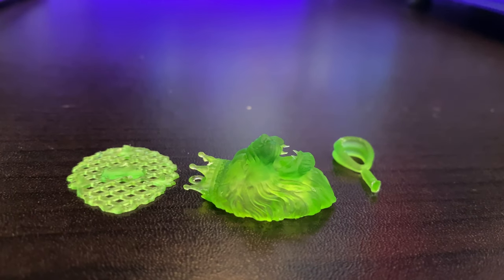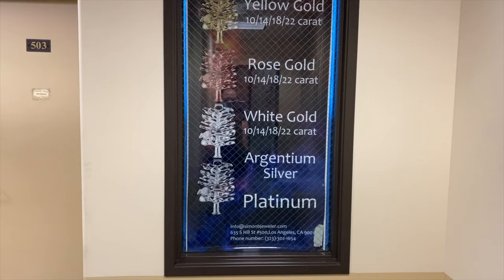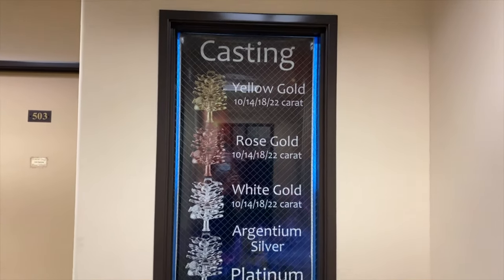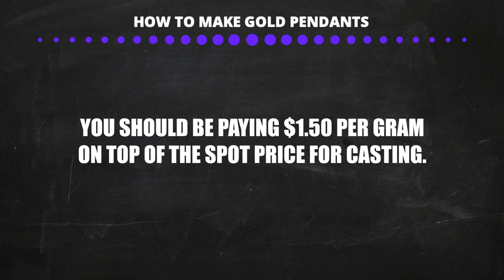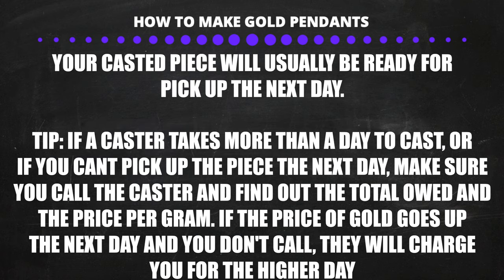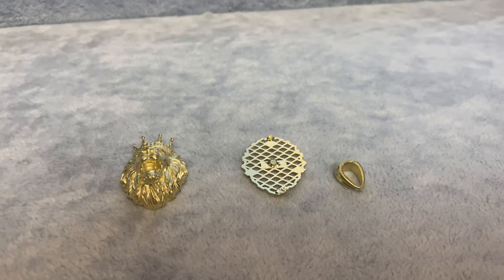The next step is to take these waxes to the caster and cast them into gold. Most major cities in America have a jewelry district — go down there and find a caster. Tell the caster what karat gold you want: 10k, 14k, or 18k, and what color: yellow gold, white gold, or rose gold. You should be paying $1.50 per gram on top of the spot price. If you won't be able to pick up your piece the next day, call the caster and lock in your price — if gold goes up they'll take advantage of you.